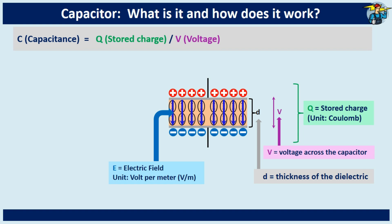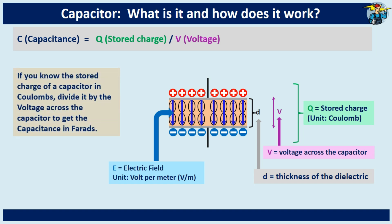Then the capacitance can be given by the equation: capacitance equals stored charge on it divided by voltage across the capacitor. If you know the stored charge of a capacitor in coulombs, divide it by the voltage across the capacitor to get the capacitance in farads.